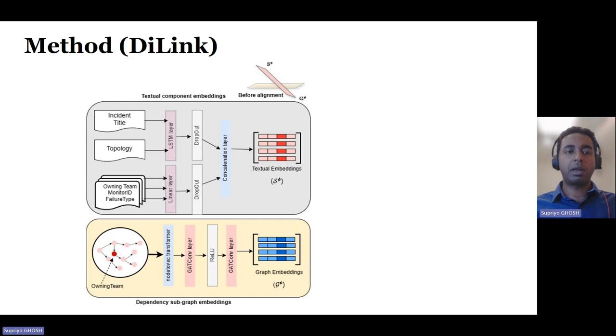Our proposed DI-link model has two modules. One computes the embeddings from textual and contextual information, and the other one computes the embeddings from localized dependency graph information.